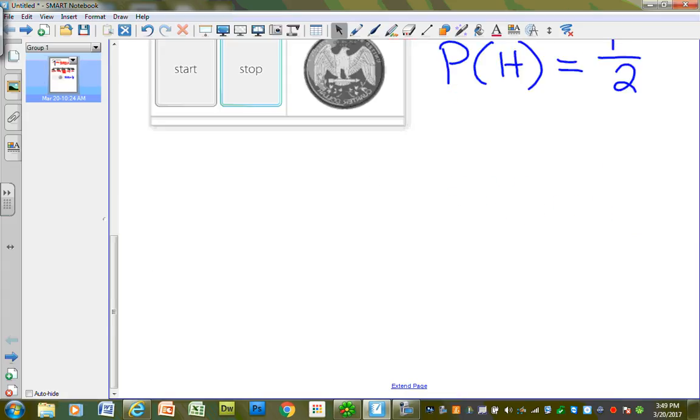When we are writing probabilities, we usually write them as a fraction. Sometimes, we can write them as a percent. But, if we write them as a fraction, we always reduce or simplify. We always simplify probabilities.